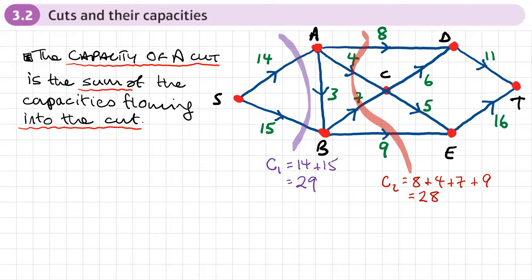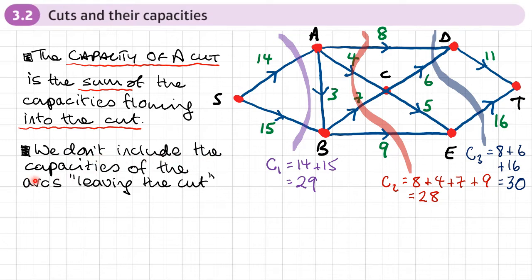And then if I did one more cut, let's say across here, so let's do this in the highlighter pen. So let's say I did one like this and I wanted to work out the capacity of this cut. Let's call this C3, so again, only the capacities which are flowing into it, that would be 8 plus 6, 6 is flowing into it, and 16 is flowing into it. So we don't include the ones which are flowing out. So 8 plus 6, that's going to be 14, 14 plus 16, that's going to be 30. So this last cut here has a capacity of 30. So just to reiterate, we don't include the capacities of the arcs leaving the cut, only those going into the cut.